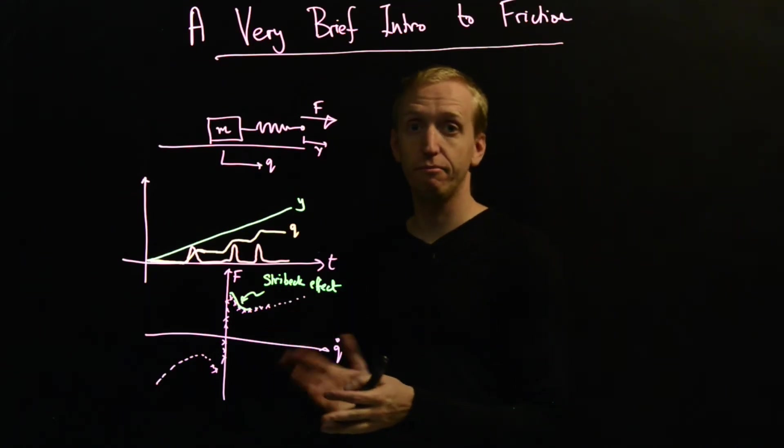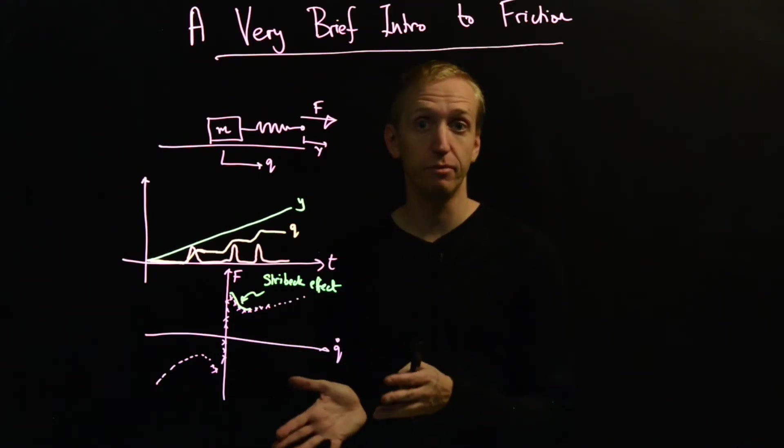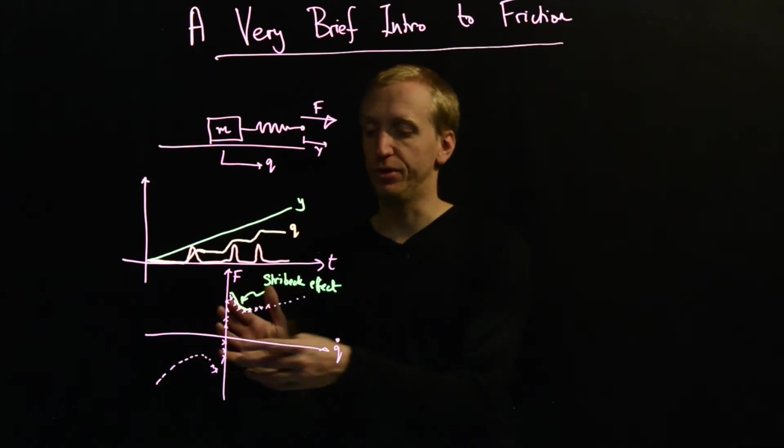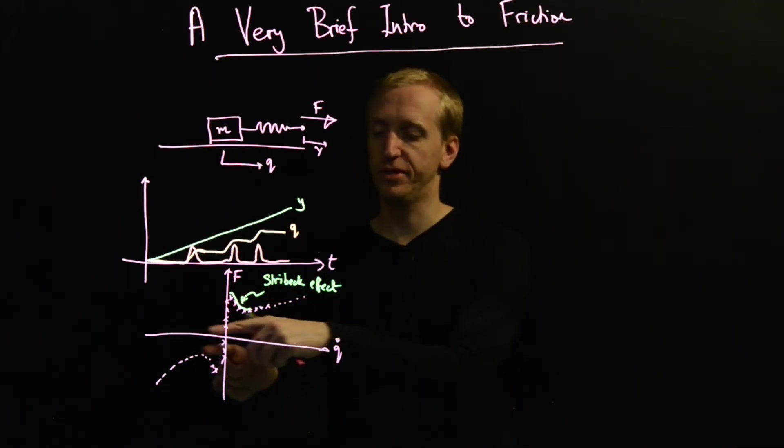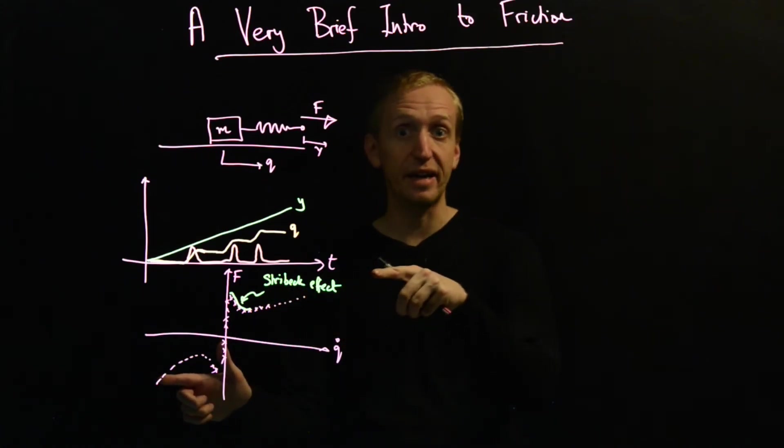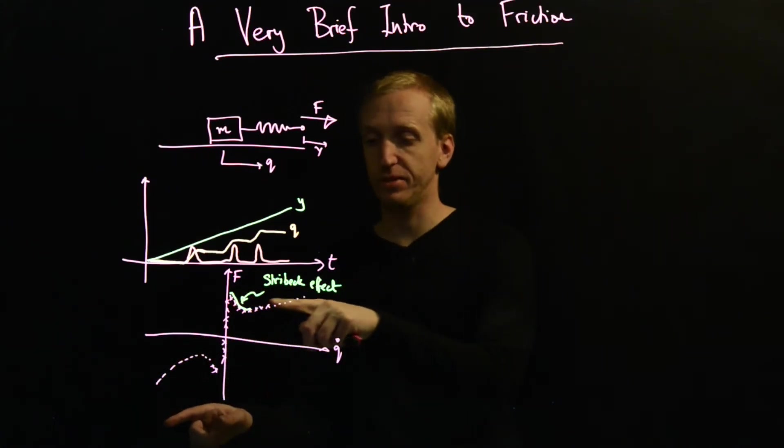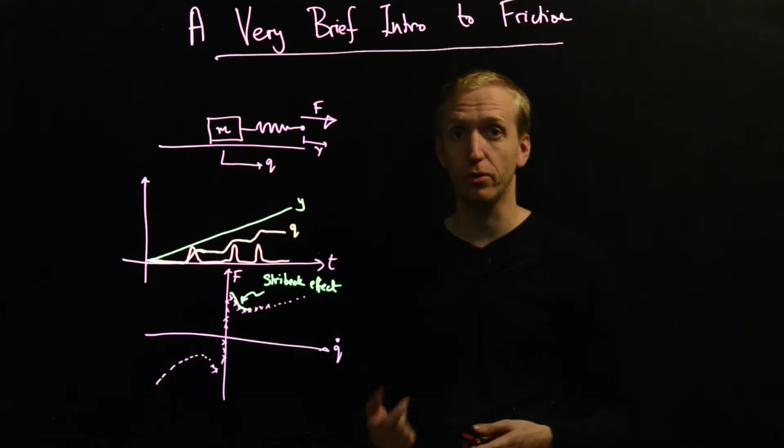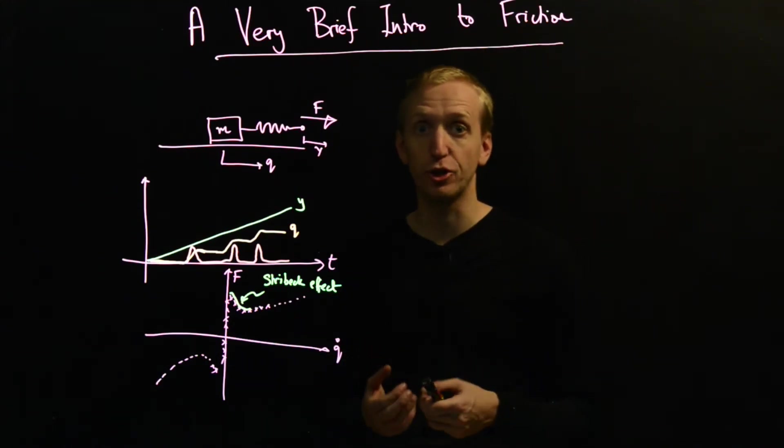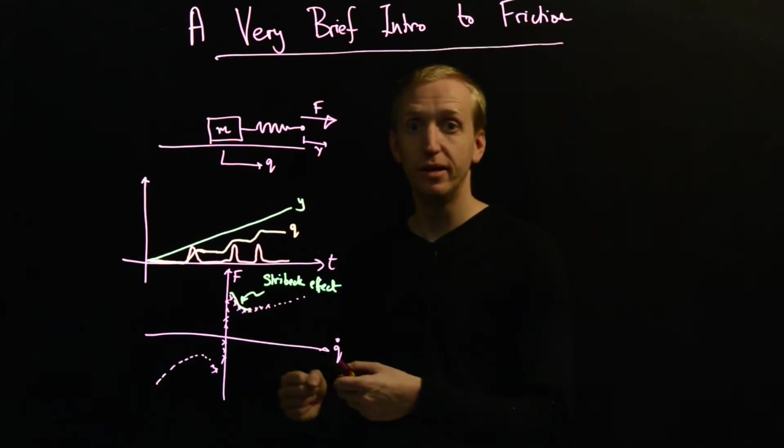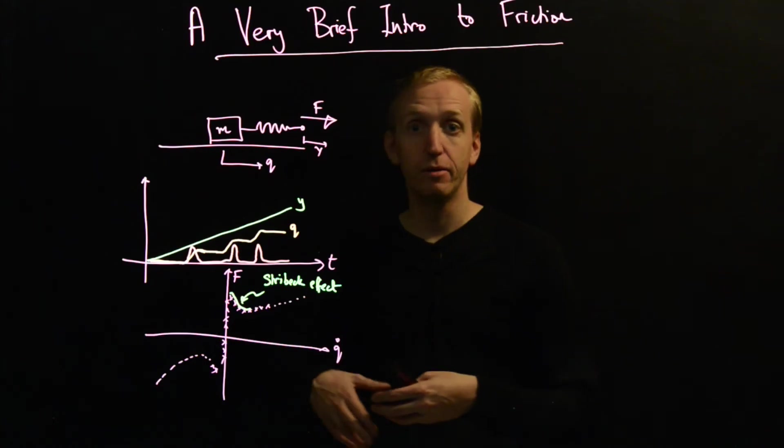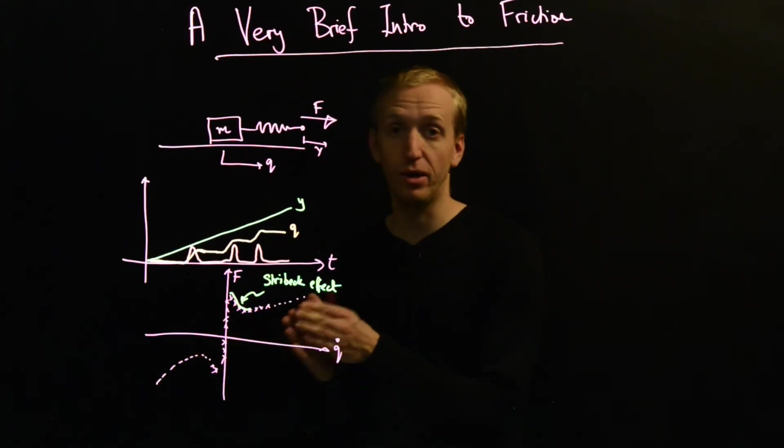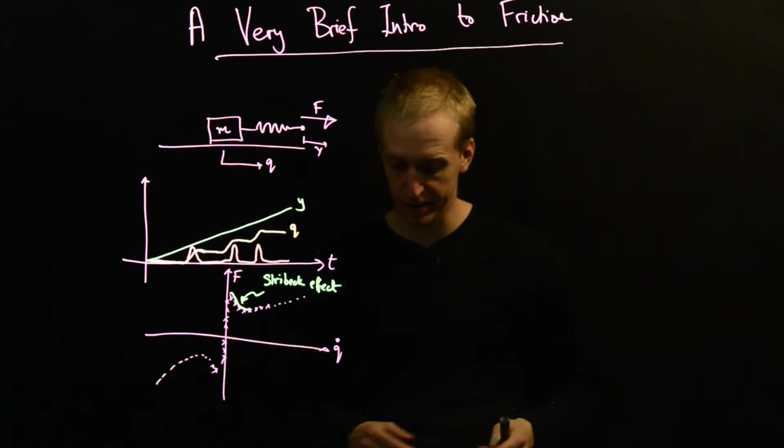This is far from the end of the story as far as friction models go. Only the simplest models of friction will be representable through some static nonlinearity with a shape like this. More advanced models have friction effects that are dependent on position and the previous history of the velocity, rather than the velocity at this current point in time.